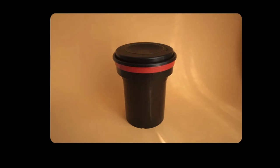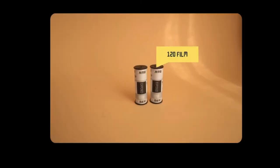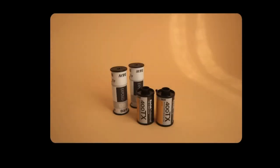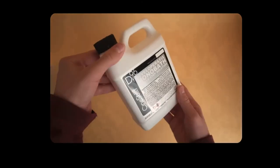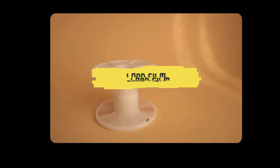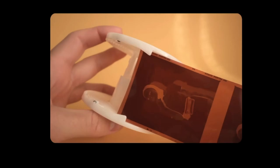To use this, you need a developing tank — like Patterson developing tanks — which lets you pour liquid in and out without light touching your film. You'll also need a couple of rolls of film; I'm trying both medium format and 35mm to see if the developer gives different results. And of course you need a bottle of Cinestill DF96, which comes in a liter bottle — enough for two rolls at once.